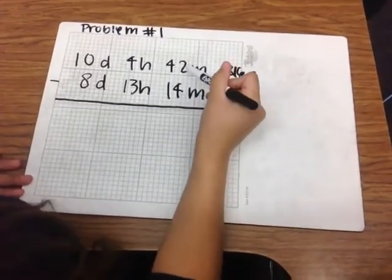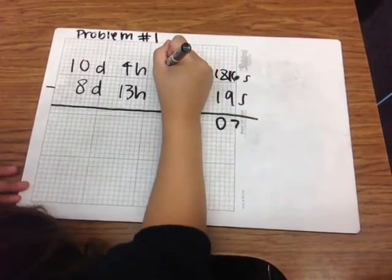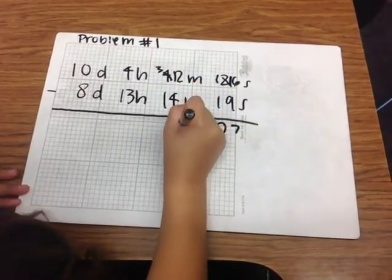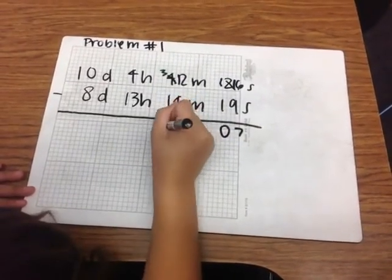Now, since we can't subtract 2 minus 4, we have to borrow 1. So this would be 3, and this will turn into 12. 12 minus 4 equals 8, and 3 minus 1 equals 2.